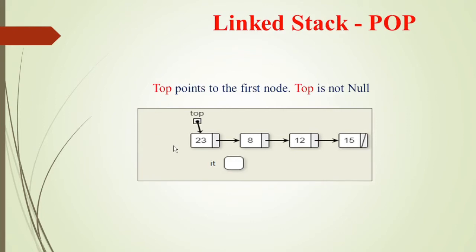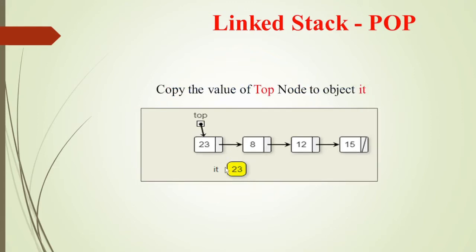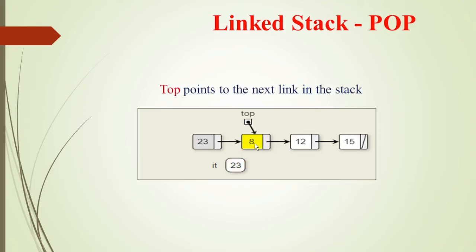Now I want to pop an element. The pop element is the top, which is pointed out, and the element value is the popped value. If top is not null, we proceed with the linked stack pop. The top element is 23. The value 23 will be copied, then top is decremented so that it points to the previous element. The node for 23 will return to the storage pool, and the pop procedure will return the value 23 to the main program.